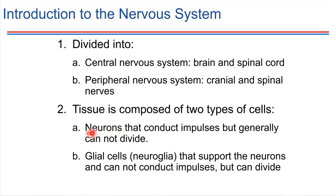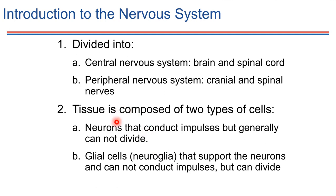Neurons are generally cells that are not capable of dividing, so they have a very specific, very defined role — they send signals, but they're not particularly able to undergo cell division. The other type of cell that makes up the nervous system is what we would refer to as glial cells, or neuroglia. The neuroglia really support the activities of the neurons — neurons are the main players, and the neuroglia are the supporting cells.